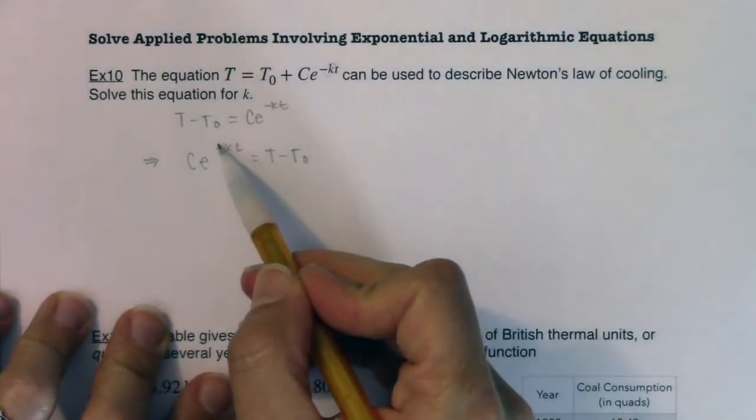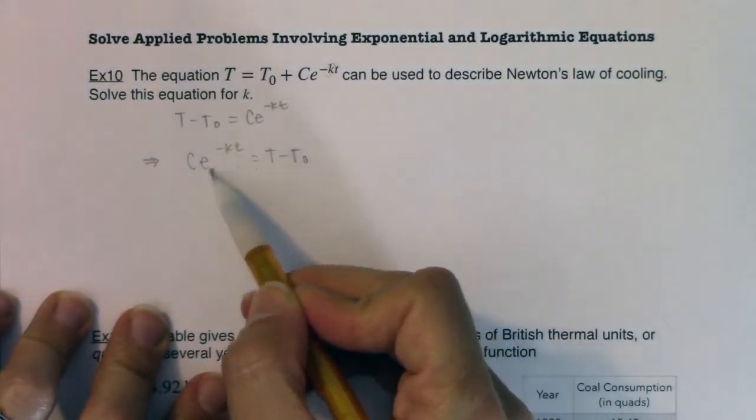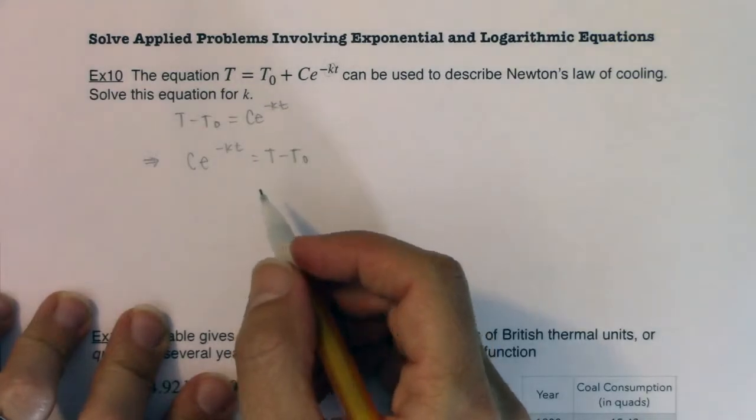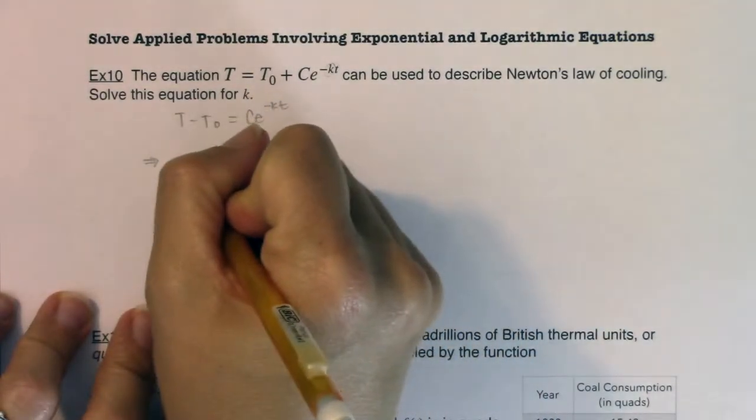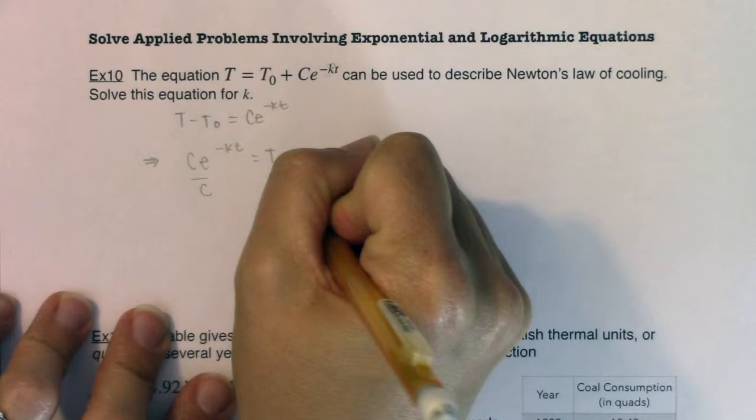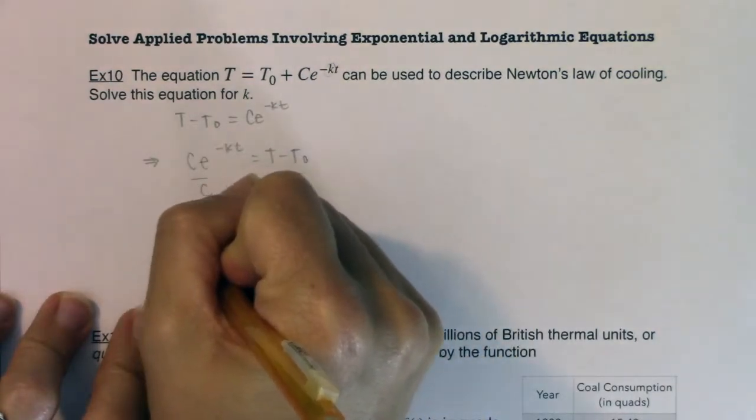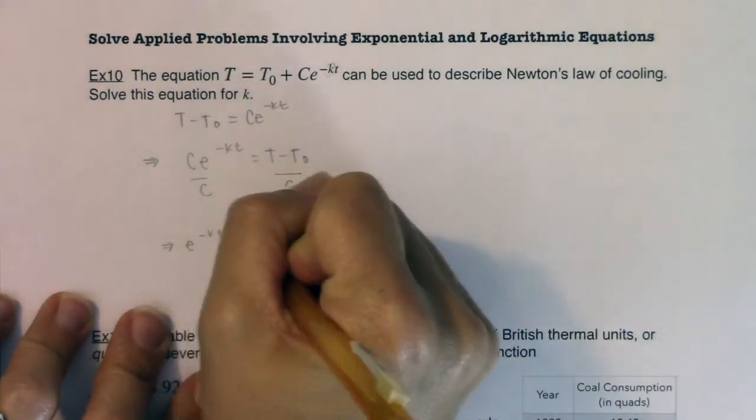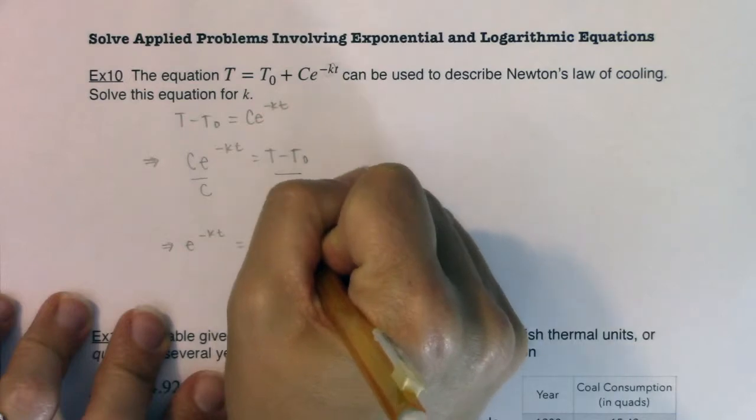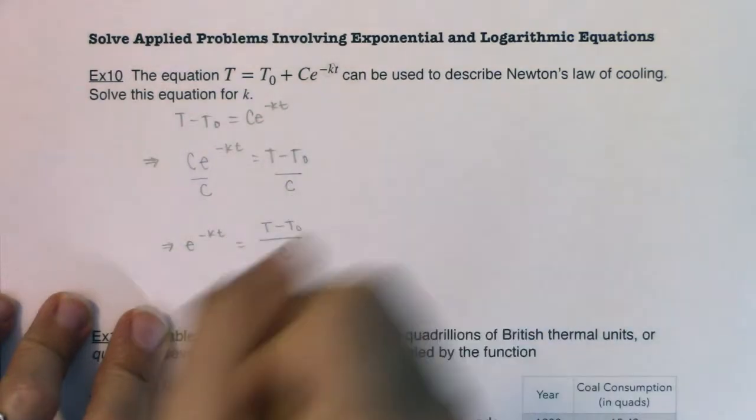I want to isolate this exponential term. So what I want to do to both sides is I want to divide by c. So if I divide by c here, I'm now looking at e to the negative kt is equal to this ratio of t minus t sub zero over c.